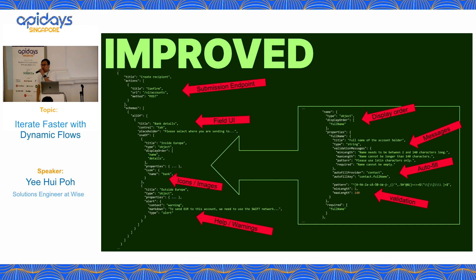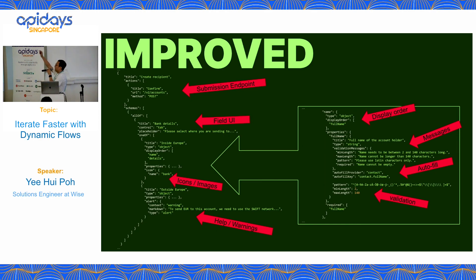So we improved on it and built a new version called Dynamic Flow — the previous one was Dynamic Fields. This includes the submission endpoint, rich UI elements like icon images and help warnings, the display order, and validation error messages. This is what we have right now.